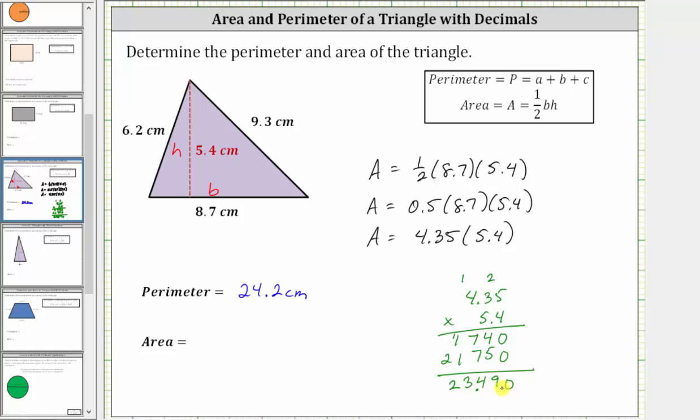But we can leave off the zero in the thousandths place value, which means the area is 23.49 square centimeters.